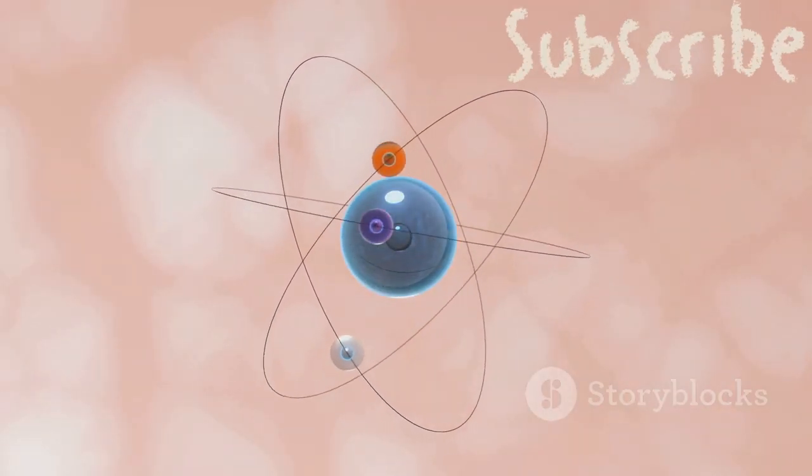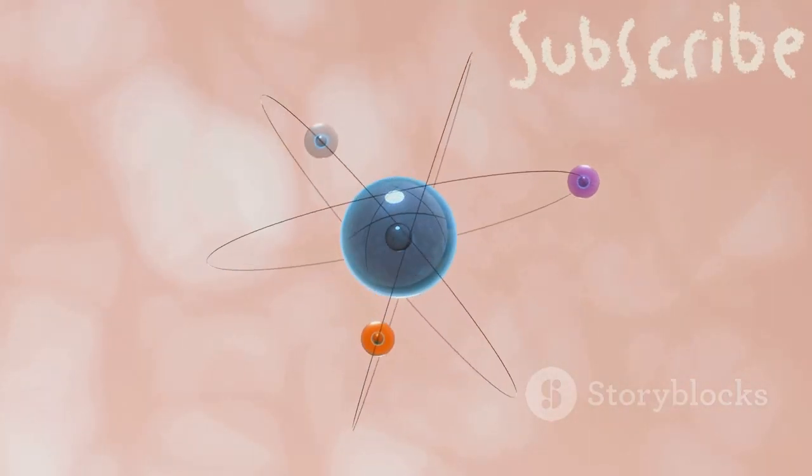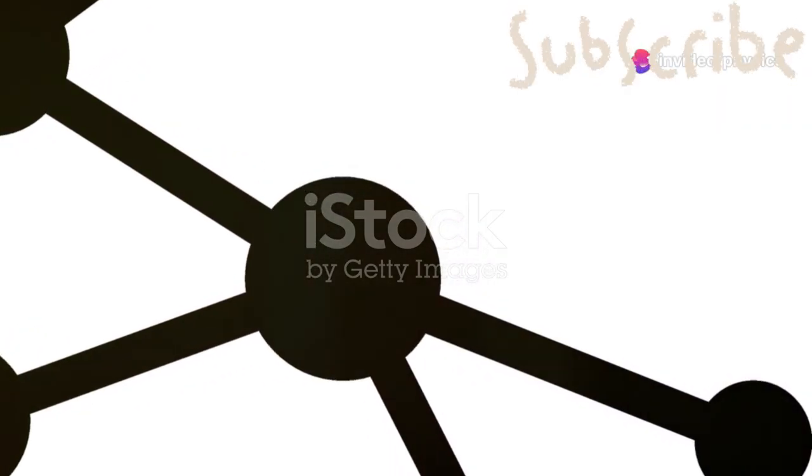Electrons are organized in energy levels or shells. The first level holds 2 electrons, while the second and beyond can hold up to 8 each.